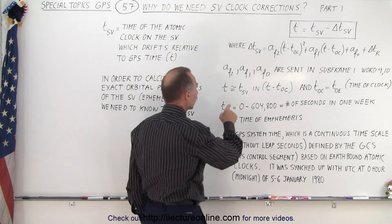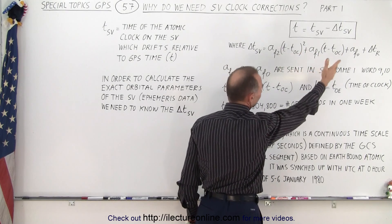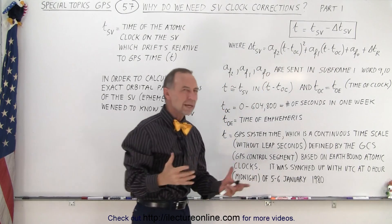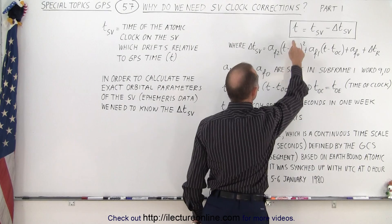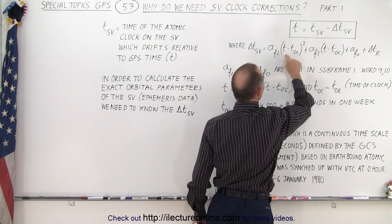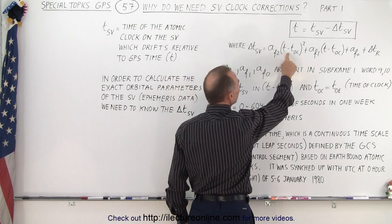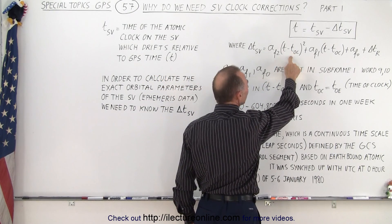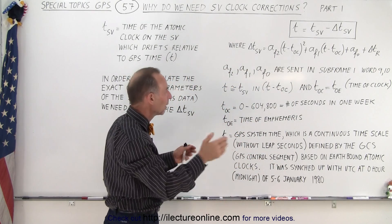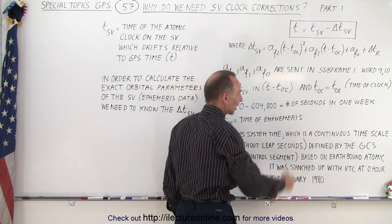Now when you look at the equation, instead of having x squared plus x and x to the zero power, we have t minus toc squared. What does that really mean? toc is called the time of the clock, and it's a running clock that runs through the entire week and resets every week — going from 0 to 604,800 seconds on a week-to-week basis.